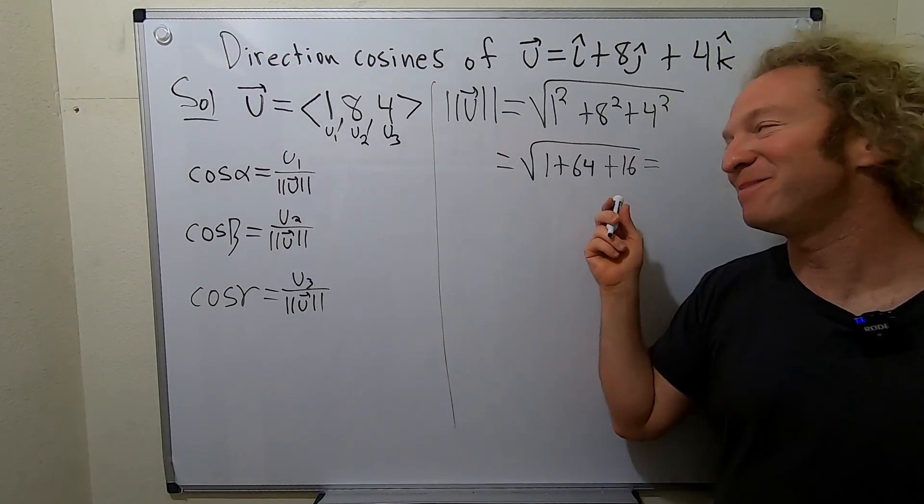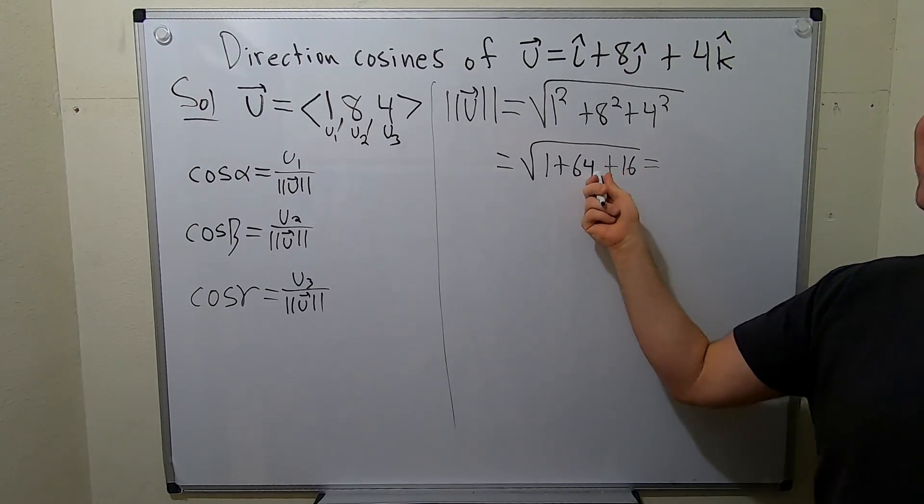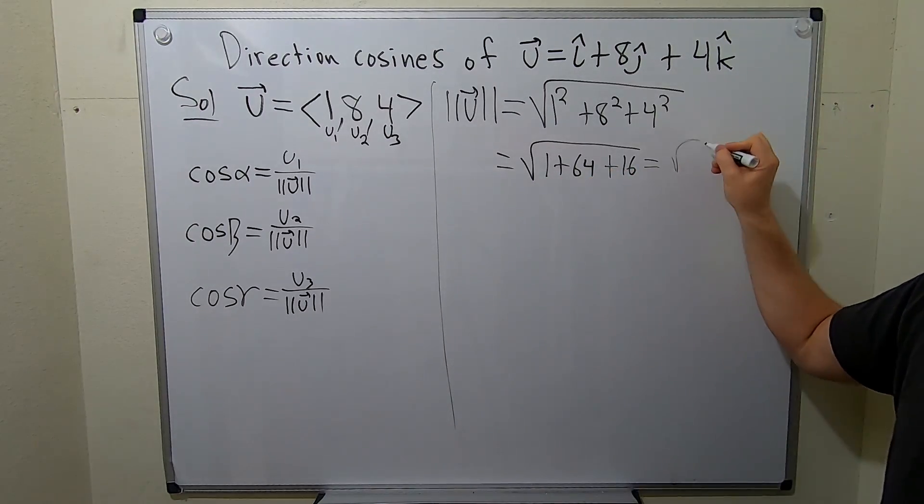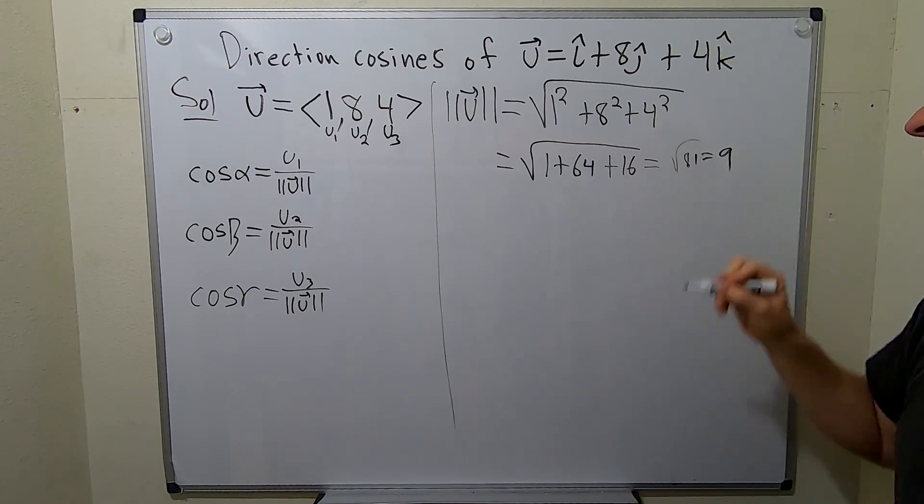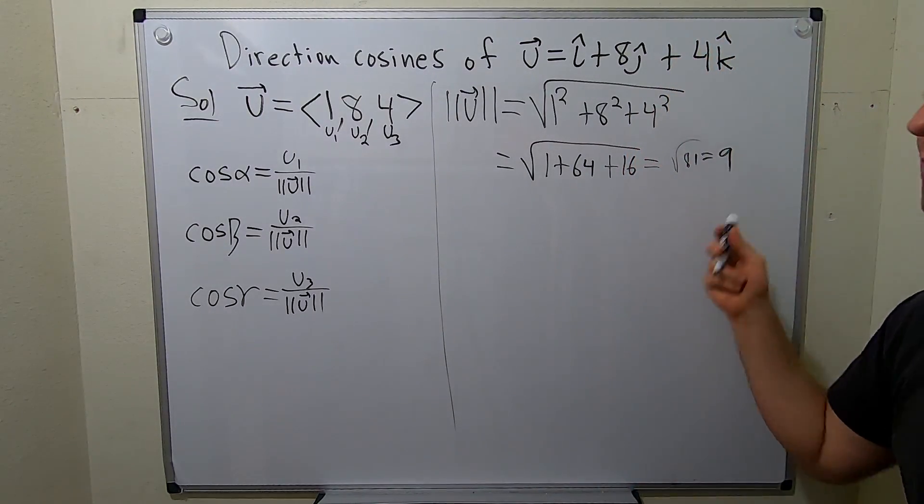This is going to be, oh, I don't mess up, 81. Because it's 16 plus 64, that's 80. Yeah, 80 plus 1 is 81, which is 9. So good. Sometimes stuff just works out so nice. So 9.